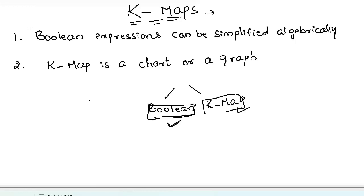So we go for K-map. K-map is a chart or a graph composed of an arrangement of adjacent cells, each representing a particular combination of variables in a sum form or product form. K-map can be used for problems involving any number of variables. The full form of K-map is Karnaugh map. If any expression or function has n variables, we can have 2 to the power n possible combinations.